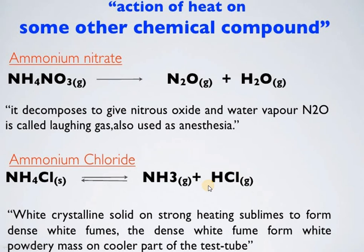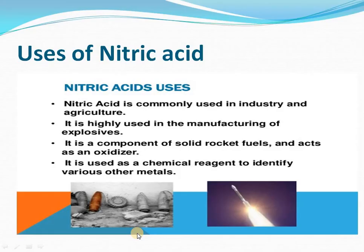Ammonium nitrate on heating produces N2O — laughing gas — as we discussed. Next, ammonium chloride when heated gives ammonia and HCl; if heated together, dense white fumes appear in the middle and cooler top layers of the test tube.